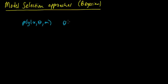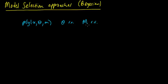Theta, as usual, if we're being Bayesian, we put some prior on theta. So theta is a random variable. And let's call it capital M — capital M is a random variable that takes these values little m, and that will be our model random variable.